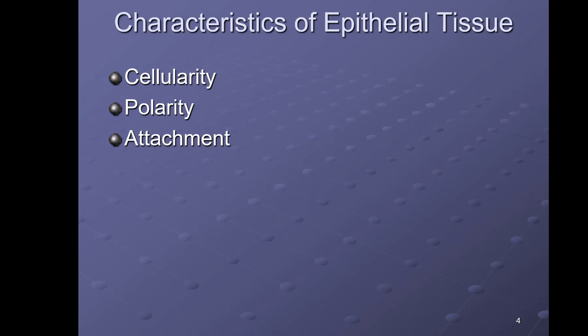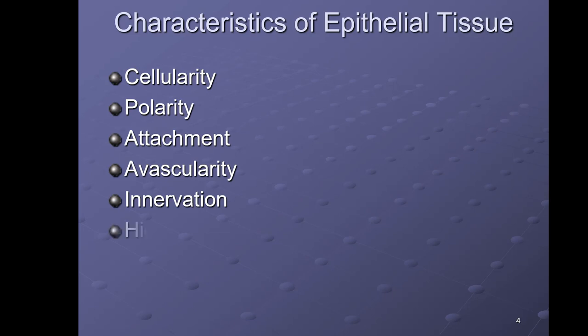Characteristics of epithelial tissues: cellularity means they have a lot of cells; polarity means the cells are different on each side — one side is generally attached to something called the basement membrane and the other side is free; attachment means they're attached to a surface, commonly known as the basement membrane; and avascular means epithelial tissue does not have a blood supply.